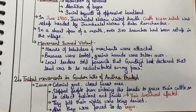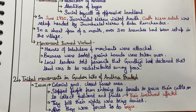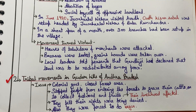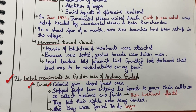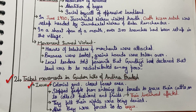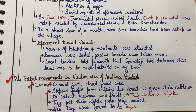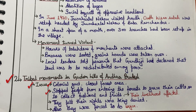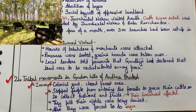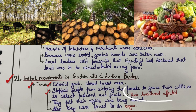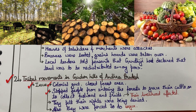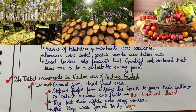Now let's look at our notes. The second movement under rebellion in the countryside was the Tribal Movement in the Gudam Hills of Andhra Pradesh. The first issue was that the colonial government closed the forest areas — the British government stopped people from entering forests to graze their cattle or collect fuel wood and fruits. These people had no permission to take their cattle in or collect anything. So their livelihood got affected and they felt their rights were denied.